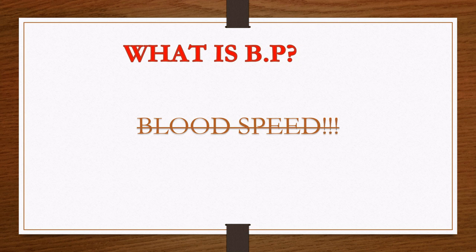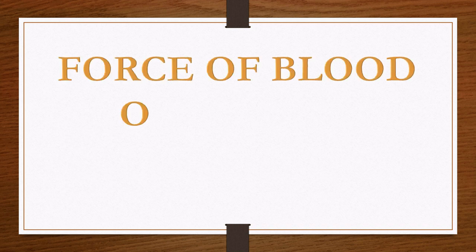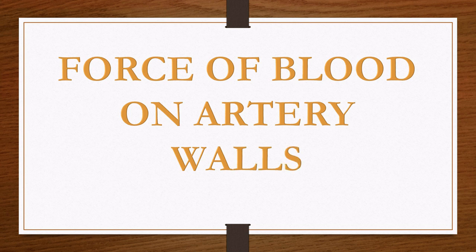Some of you have been thinking that blood pressure is the speed of blood — no, what we call umuvuduko wa maraso. That is not blood pressure. If blood pressure is not umuvuduko or blood speed, then what is it? Actually, blood pressure is the force of blood on artery walls. Think about pressure — in physics, pressure is force over a surface area. Therefore, blood pressure is force of blood against arterial walls. It's not the speed of blood as some people say in their culture.